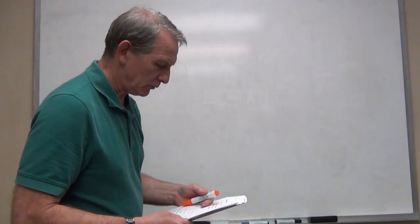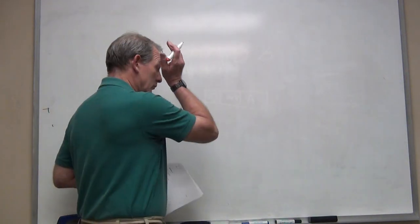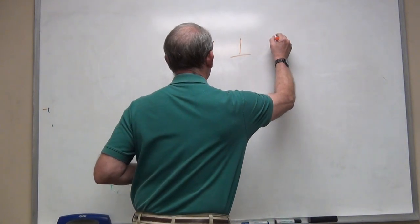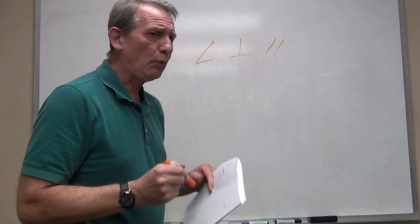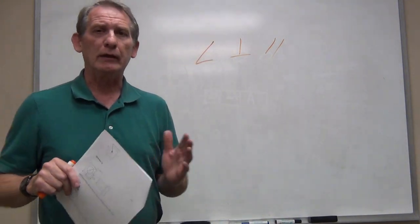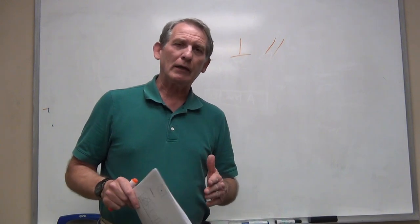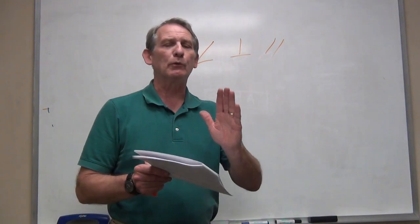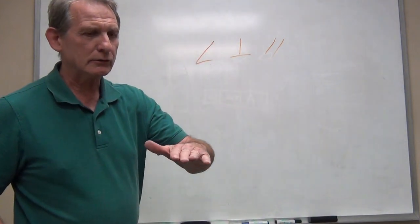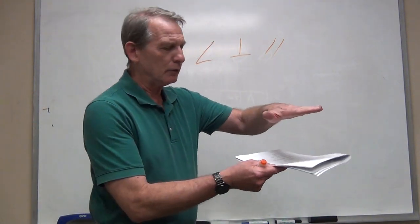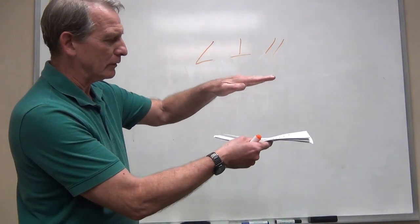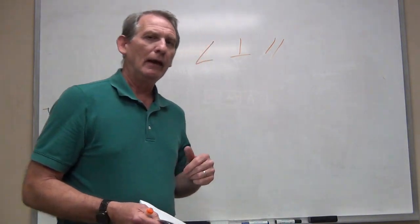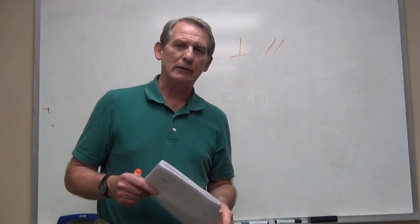Conversely, orientation controls — angularity, perpendicularity, and parallelism — always have a datum, because they are controlling rotational degrees of freedom. When we talk about rotation, we have to rotate from one position to another, so we're always comparing where the element is relative to something else. Whether it's parallel to a surface or any sort of angularity control, we've always got a starting point, and orientation requires that datum as a starting point.